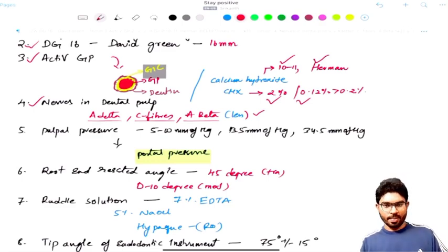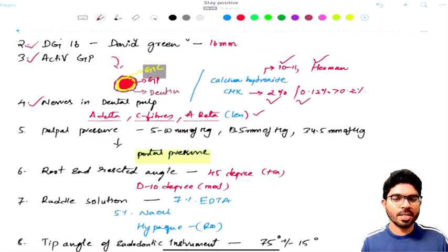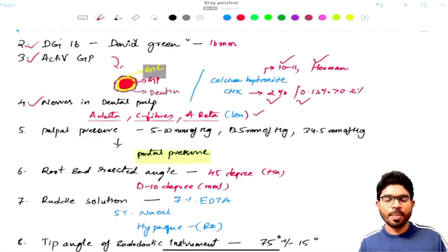A delta are present in the periphery. C fibers are present in the core, C fibers are present in the center. C fibers are unmyelinated fibers, whereas A delta and beta fibers are myelinated fibers. Whenever you give LA, the first fibers which get anesthetized by LA is unmyelinated fibers - those are C fibers.